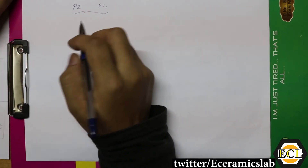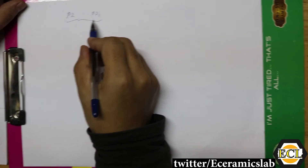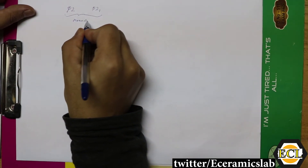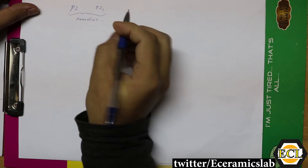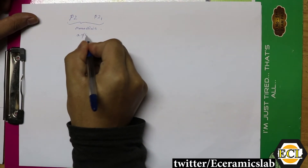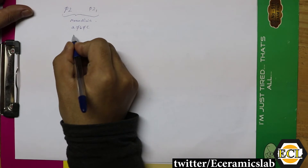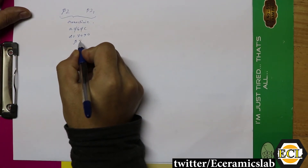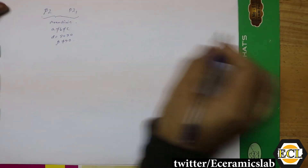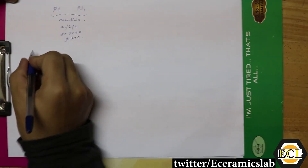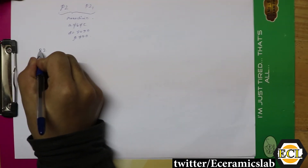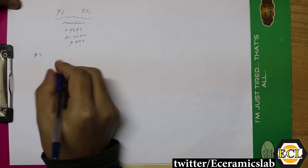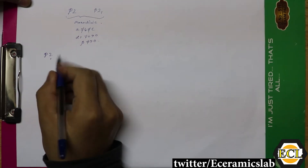Now we will discuss the next two space groups: P2 and P21, which belong to the monoclinic system. The lattice parameters are: a ≠ b ≠ c, alpha = gamma = 90°, and beta ≠ 90°. First is the P2 space group.